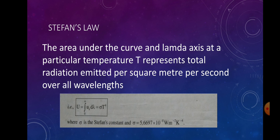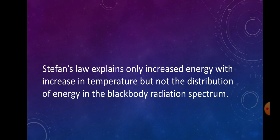Stefan's constant σ = 5.6697 × 10⁻⁸ W m⁻² K⁻⁴. Stefan's law explains only the increase of total energy with increasing temperature, but not the distribution of energy in the black body radiation spectrum. The question of how energy is distributed in the black body spectrum is a separate matter.